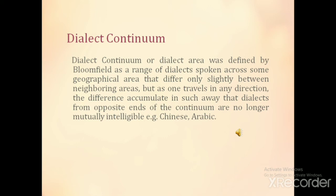Dialect continuum, or dialect area, was defined by Bloomfield as a range of dialects spoken across some geographical area that differ only slightly between neighboring areas, but as one travels in any direction the differences accumulate in such a way that dialects from opposite ends of the continuum are no longer mutually intelligible. For example, Chinese and Arabic.